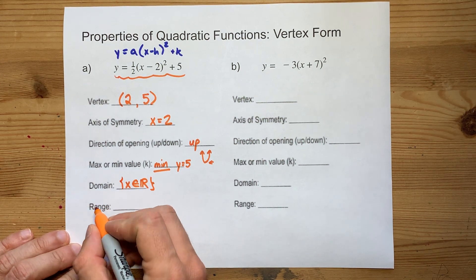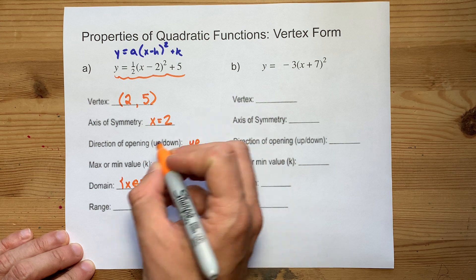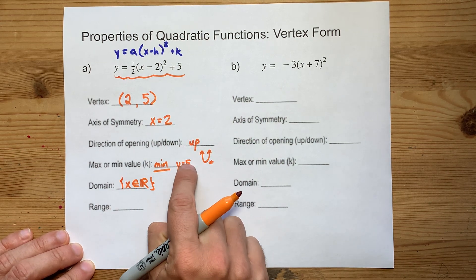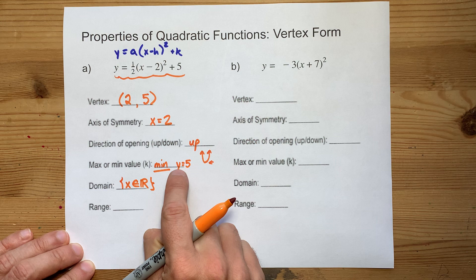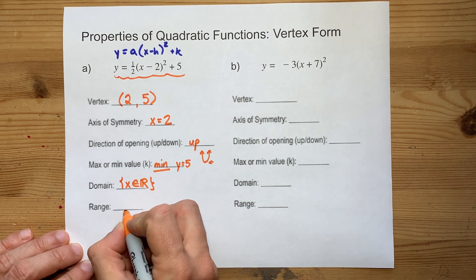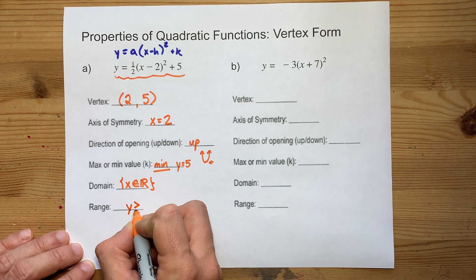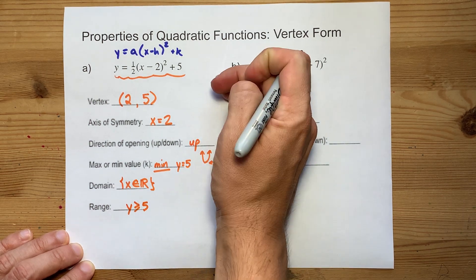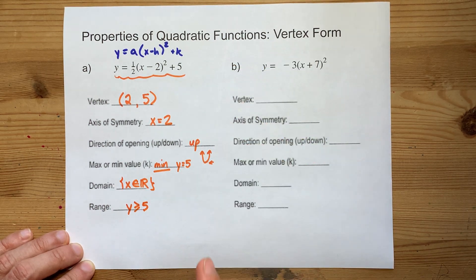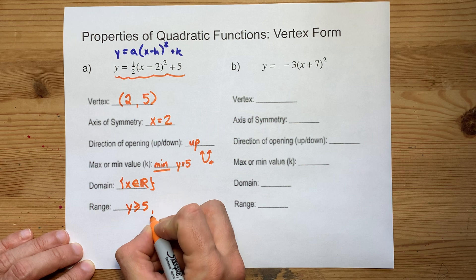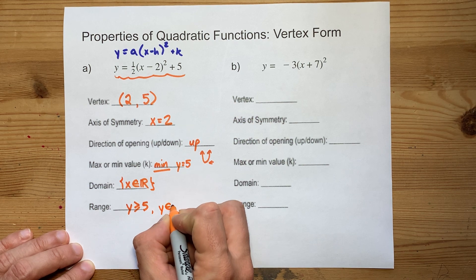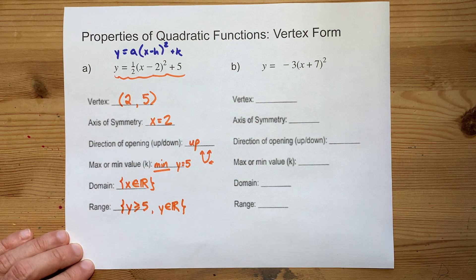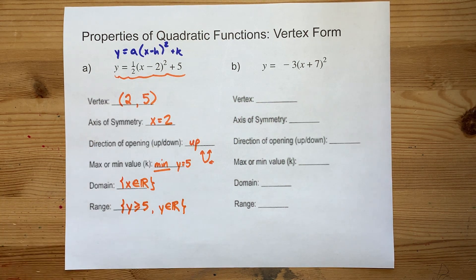The range depends on the direction of opening and the max or min value. Because we are going up from 5, we say the range is y greater than or equal to 5 — the 'up' means it's greater than that threshold. Write y as an element of the real numbers, put it in set notation with curly brackets, and you're done.